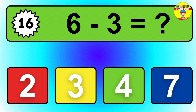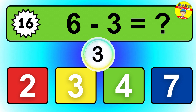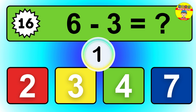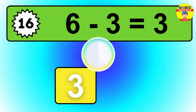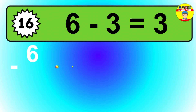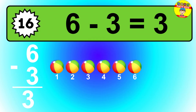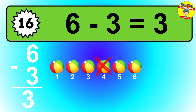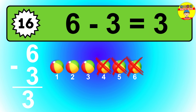Question 16. 6 minus 3 equals what? So the answer is 6 minus 3 is 3. Let's count it: 1, 2, 3.